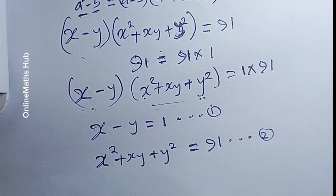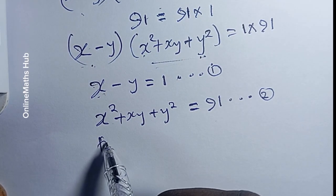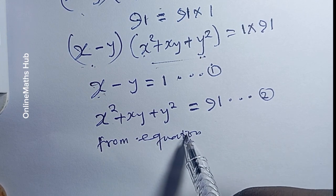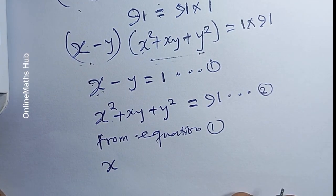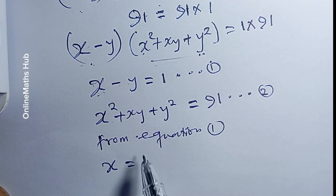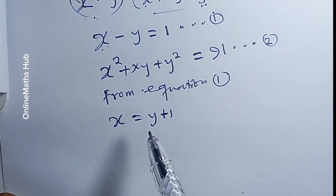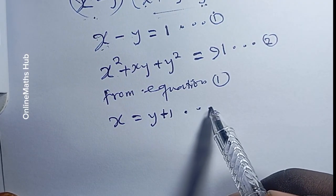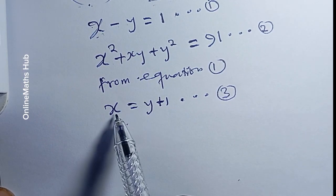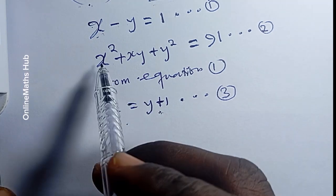Comparing the two sides, we can set x minus y equal to 1 — call this equation 1 — and x² plus xy plus y² equal to 91 — call this equation 2. From equation 1, we make x the subject, giving us x equal to y plus 1. Call this equation 3. We substitute equation 3 into equation 2.